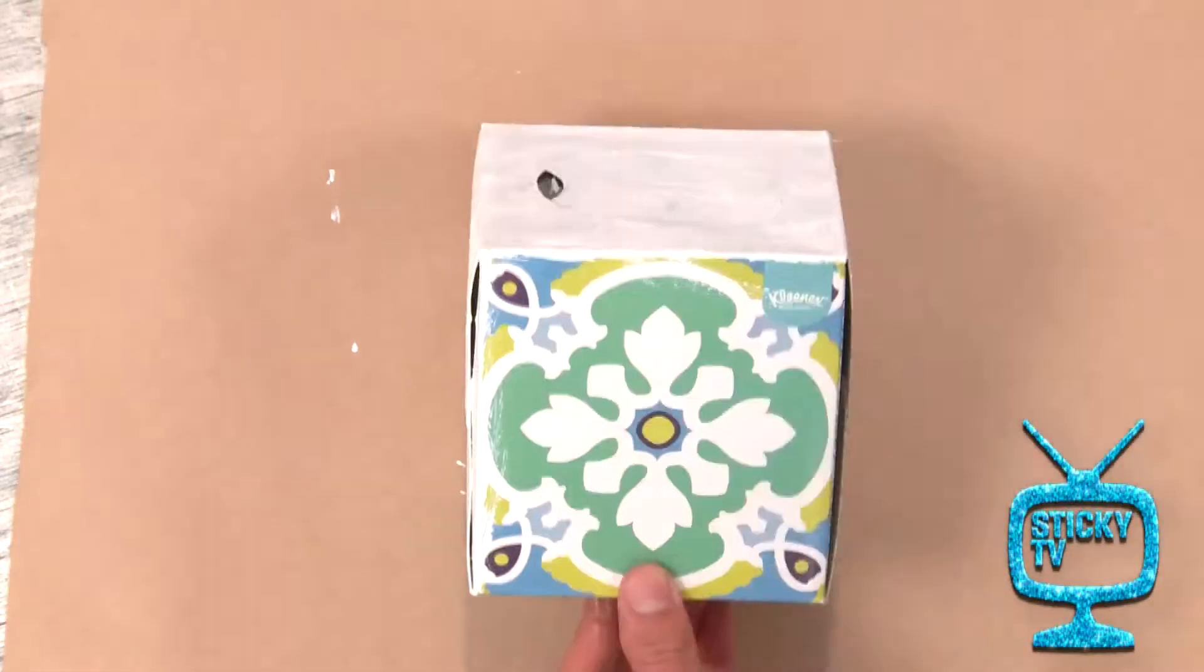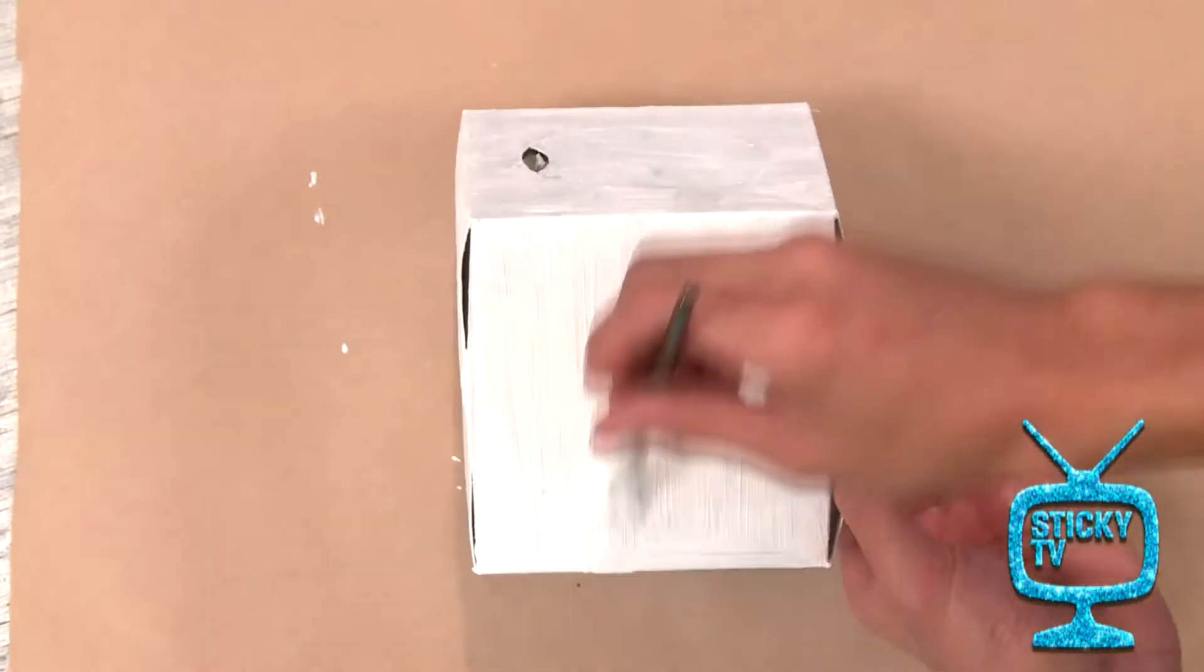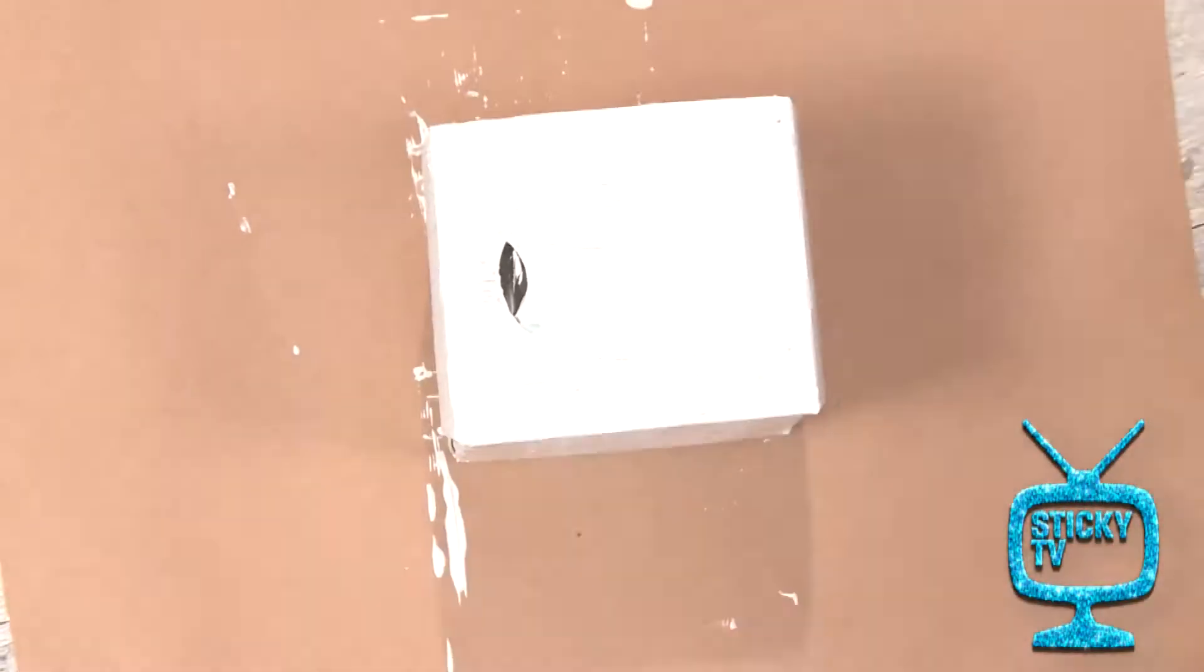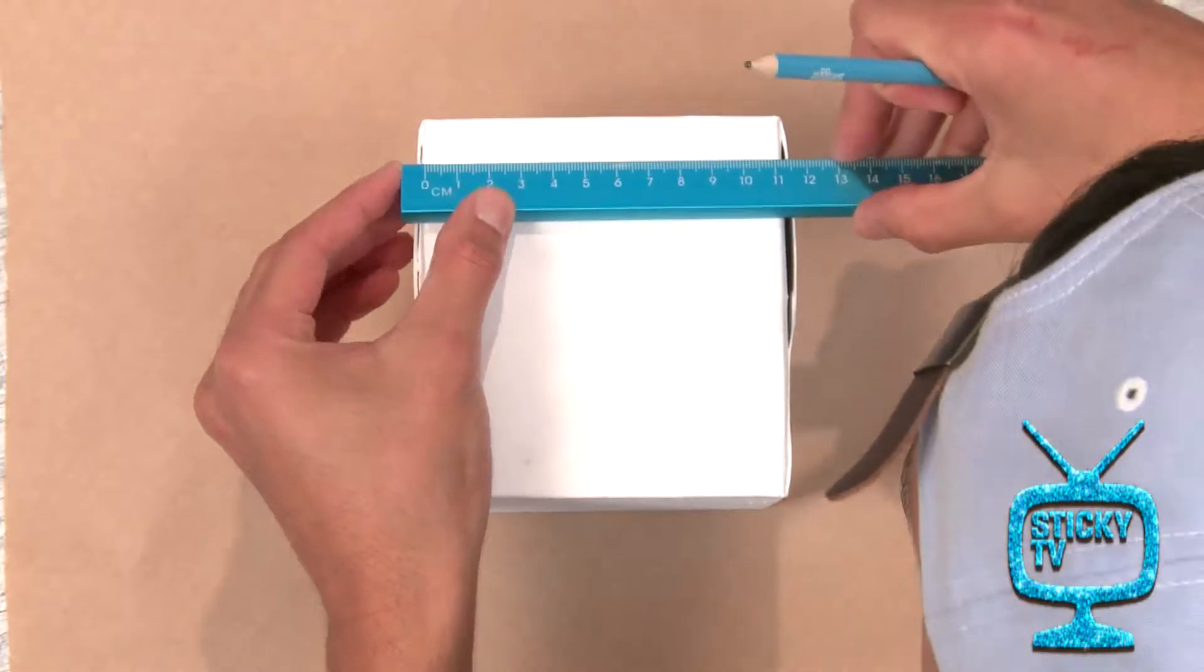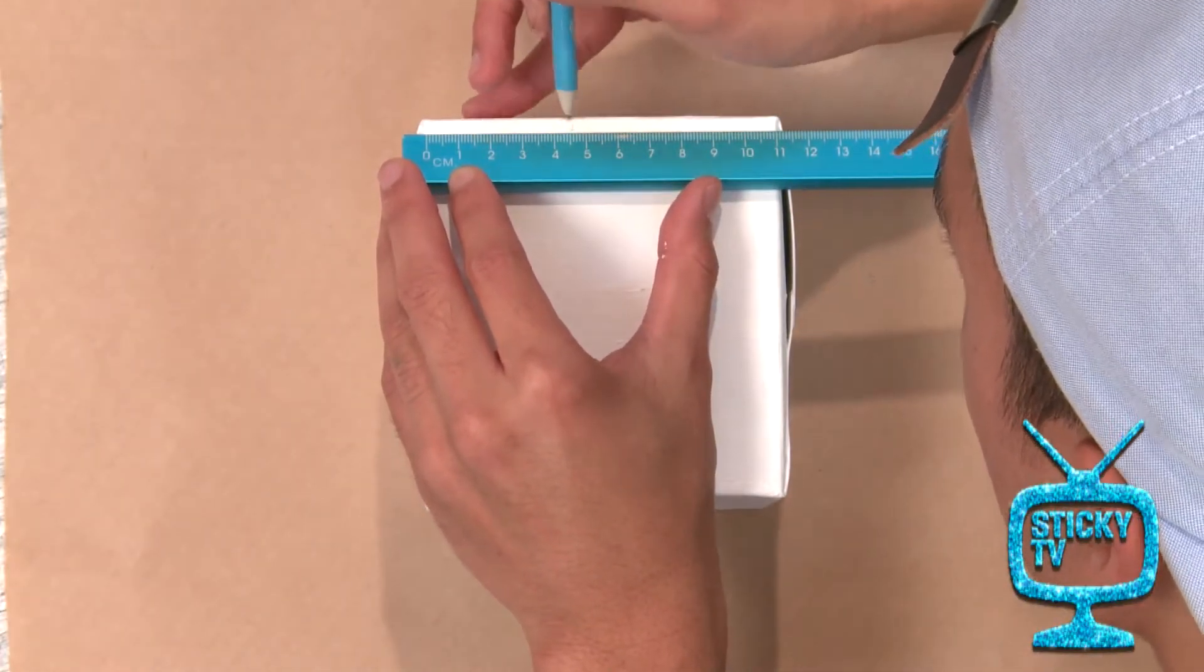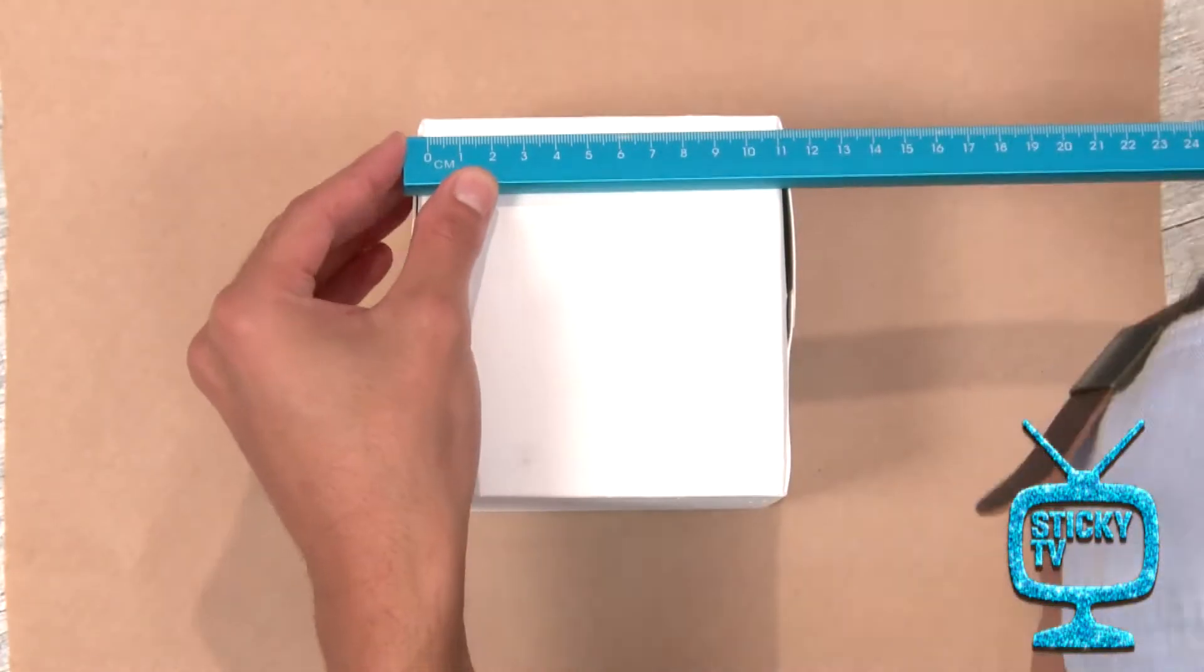Get an even coverage, but don't worry about making it perfect as we're painting over it with other colors. Step number two: evenly rule up the squares with a pencil and ruler. To do this, measure the width of the box and divide the length by three.